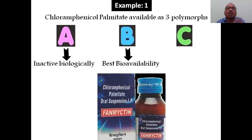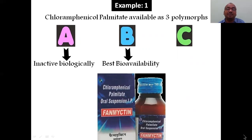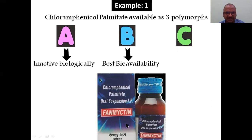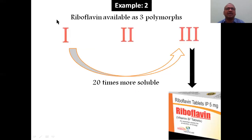Example: chloramphenicol palmitate, an antibiotic, is available in three polymorphs — polymorph A, polymorph B, and polymorph C. Polymorph B shows the best bioavailability. Polymorph A in oral suspension is completely inactive — it exists in that form but is inactive.